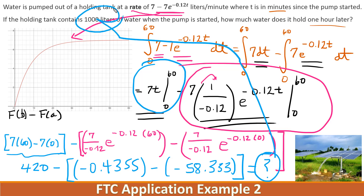Remember, whatever you get, you need to take 1,000 minus that actual answer, because it says the holding tank contained 1,000 liters — this integral gives the amount that got pumped out, so you do 1,000 minus that to find the amount remaining in the tank at that time.